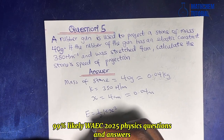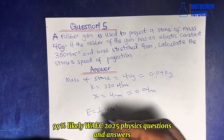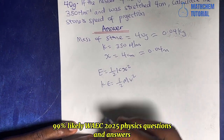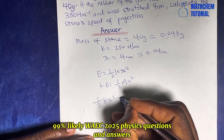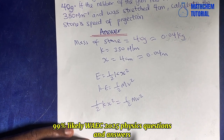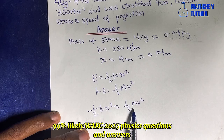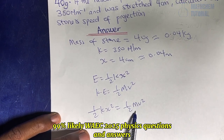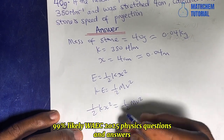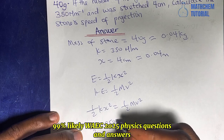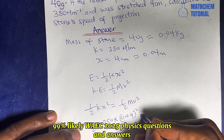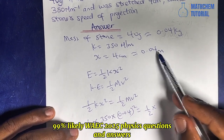We know elastic potential energy = ½kx² and kinetic energy = ½mv². Equating both: ½kx² = ½mv², so we can cancel the ½ on both sides and solve for v. Substituting: 350 × (0.04)² = 0.04 × v².